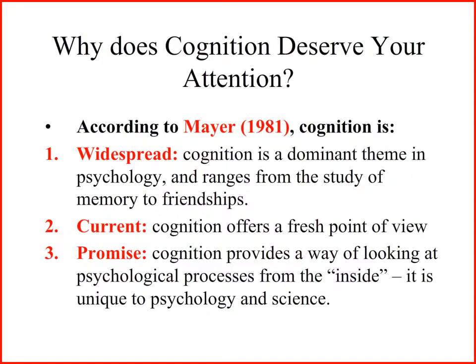Why does cognition deserve your attention? According to Mayer in 1981, and also in his 1991 book, cognition is fundamental for everyone to understand because it is so widespread. Cognition is a dominant theme in psychology — it was in 1981 and still is today. It is important across a whole range of topics, from memory to friendships. It's also current: cognition offers a fresh point of view on how the mind works. And it's full of promise — cognition provides a way of looking at psychological processes from the inside, making it unique to psychology and science.